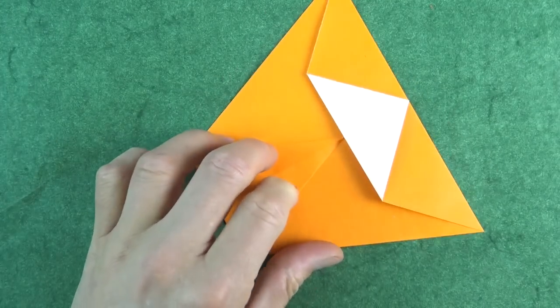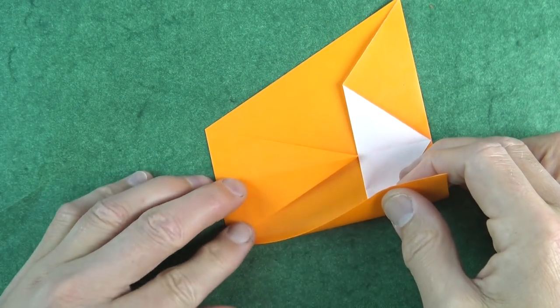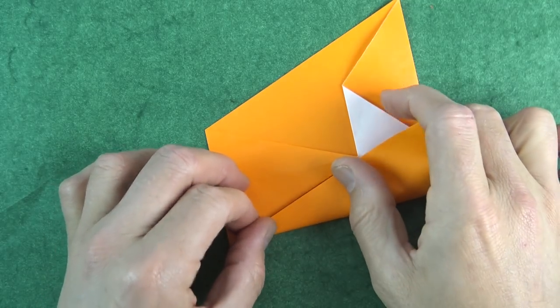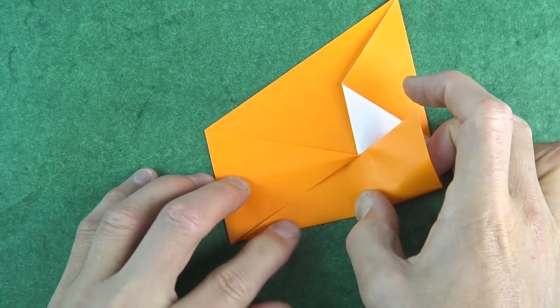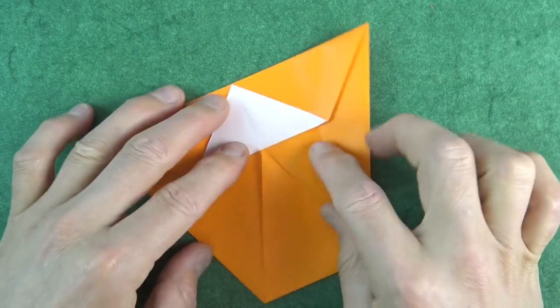And rotate, and fold this flap to this point. And rotate, and fold this flap up so that this edge aligns with this edge, but don't fold all the way. Just fold about to there. And fold it over, and unfold, and repeat.